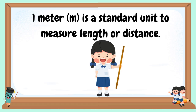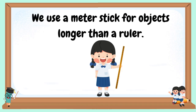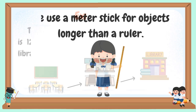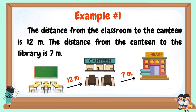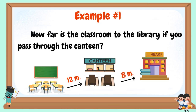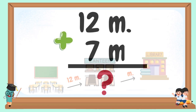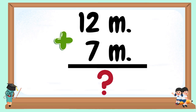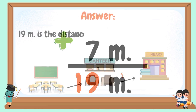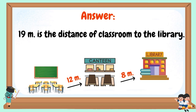1 meter is a standard unit to measure length or distance. The distance from the classroom to the canteen is 12 meters, and from the canteen to the library is 7 meters. How far is the classroom to the library if you pass through the canteen? 12 meters plus 7 meters equals 19 meters. 19 meters is the distance from the classroom to the library.